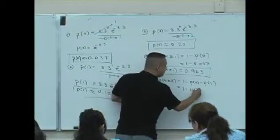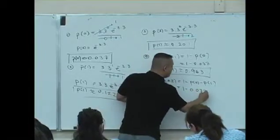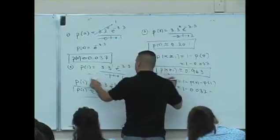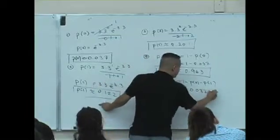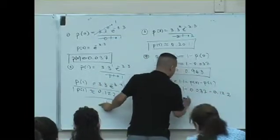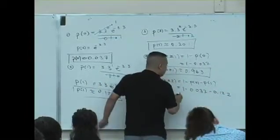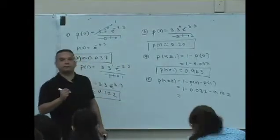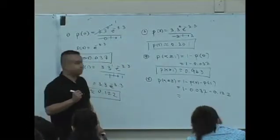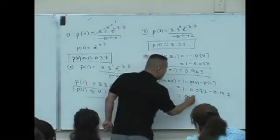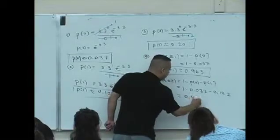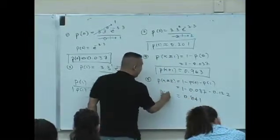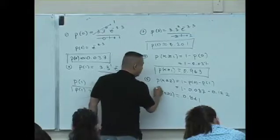1 minus P(0), which is 0.037, minus P(1). What's P of 1? It's 0.122. And what do you get here? 0.841. That's a probability of at least what? 2.